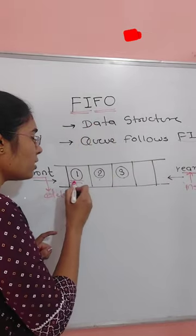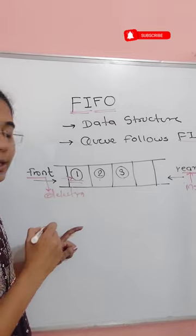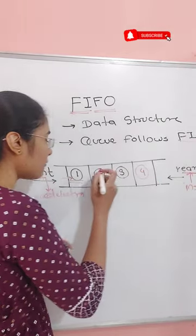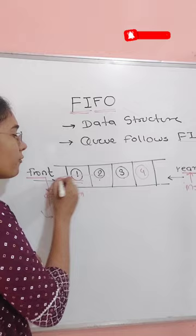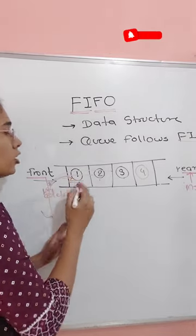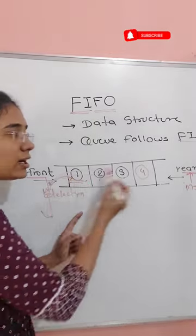Which ball is first out? Ball one, first out. We insert from the rear end. From the front end, we delete elements one by one. The first element inserted is the first element deleted.